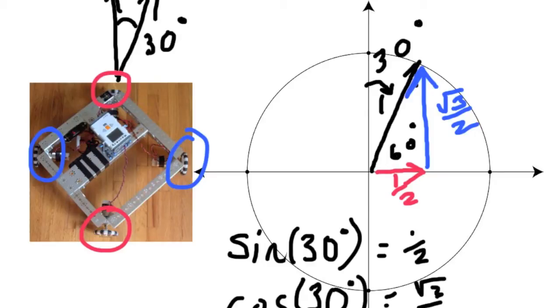So it looks like our red front and back wheels will be the sine function and the blue side wheels are referring and using the cosine function.